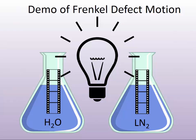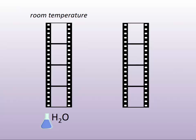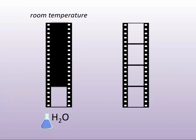They turned the lights back off, and then I instructed them to develop the photographic film as they normally would using photographic developer. The film placed in room-temperature water was fully exposed and had full silver density — a full black on the photographic film surface. And the film that was in the liquid nitrogen had absolutely no record of exposure.